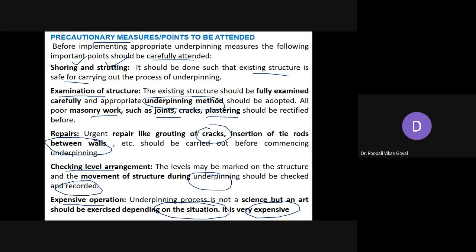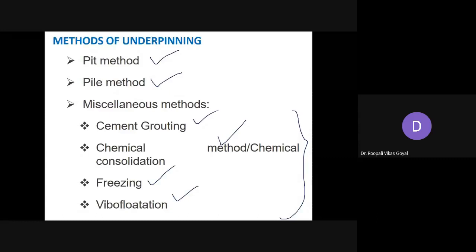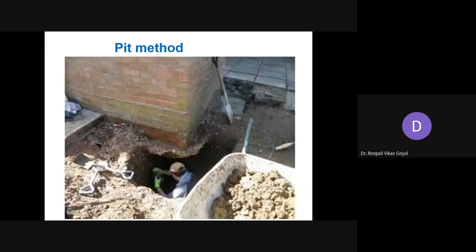There are various methods of underpinning generally used. First is the pit method — excavate below the existing foundation to expose and strengthen it. Next is the pile method — diverting the load of the structure to piles. Third is miscellaneous methods including cement grouting, chemical consolidation, freezing method, and vibroflotation. These methods were also studied earlier in the context of controlling groundwater during excavation, but here the purpose is different — to increase soil bearing capacity and strengthen the existing foundation.